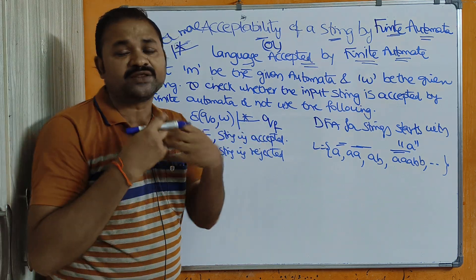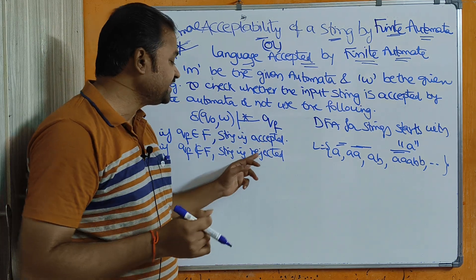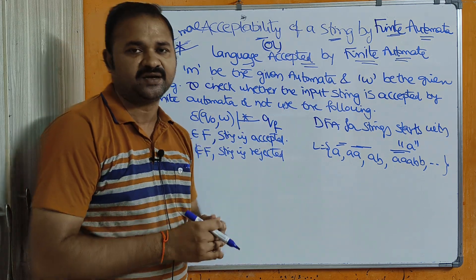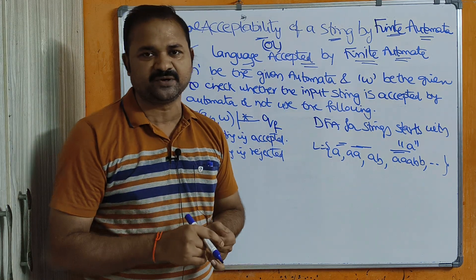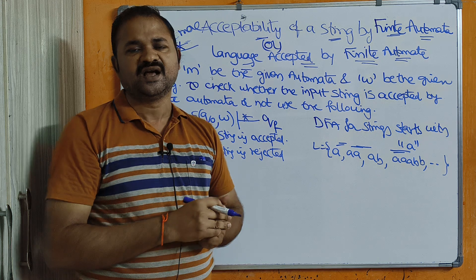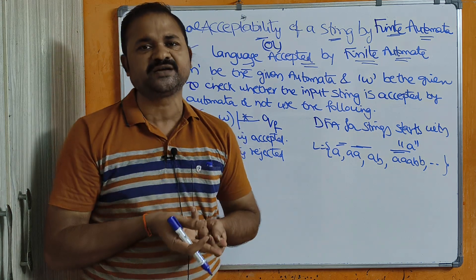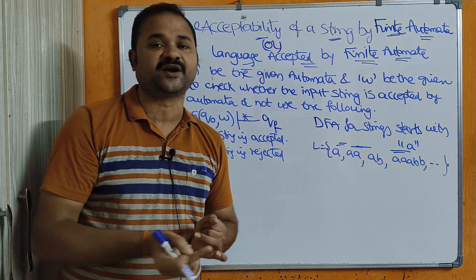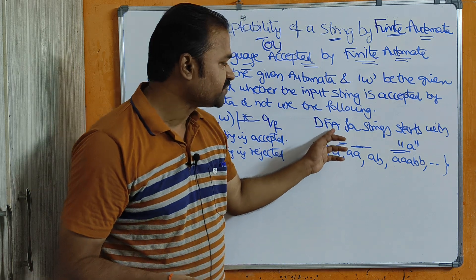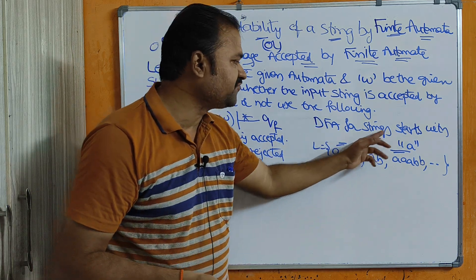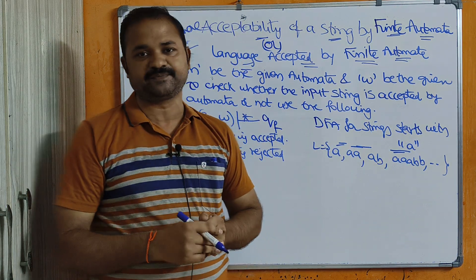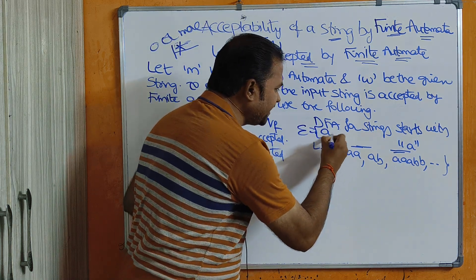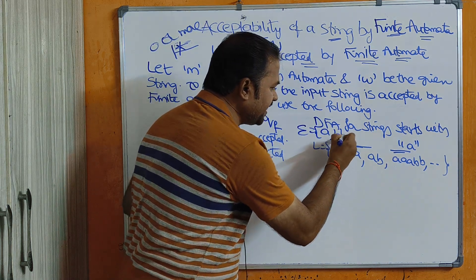If q_f does not belong to capital F, meaning the resulting state is not a final state, then the string is rejected by the finite automata. Now let's see a simple example: we will design a DFA and check whether a given input string is accepted or not.